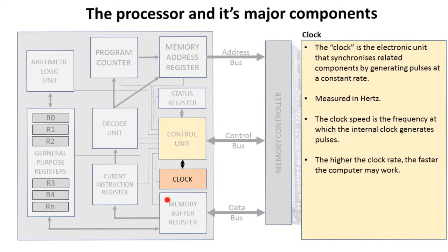The clock is another crucial component of a CPU. It is the electronic unit that synchronizes related components by generating a continuous, steady pulse. This pulse is measured in hertz — for example, a 3.2 gigahertz processor performs 3.2 billion clock cycles per second. The higher the clock rate, the faster the computer works.